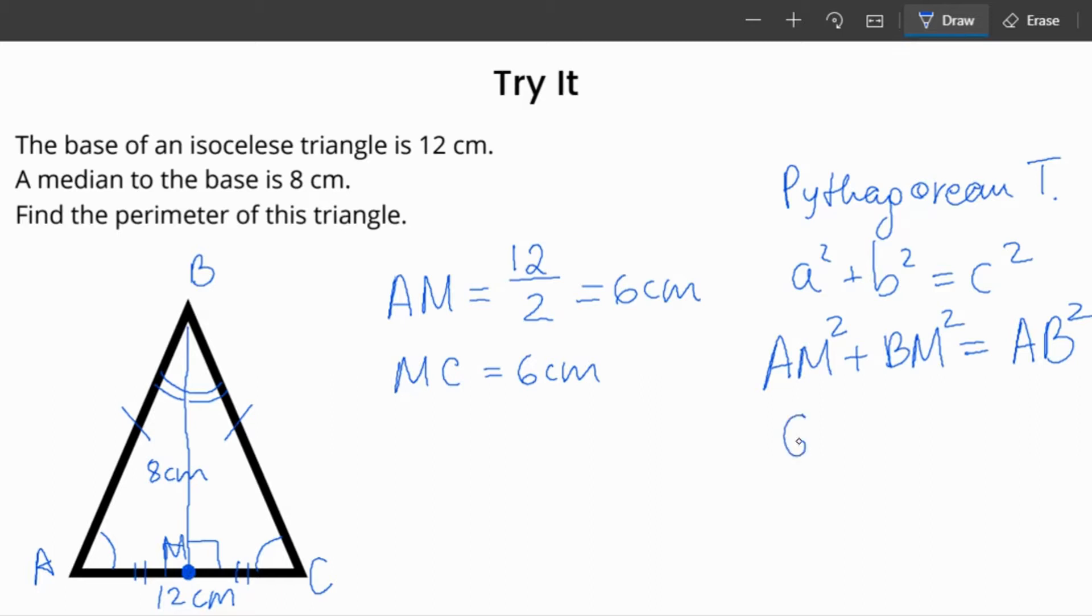So then 6 squared plus 8 squared equals AB squared. Based on BEDMAS, I need to do exponents first and then add the results. 36 plus 64 equals AB squared.